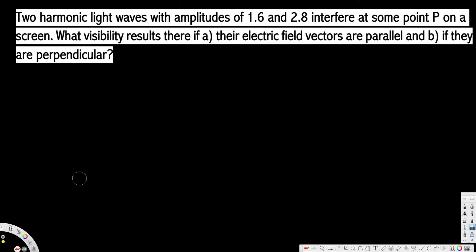Let's look at this problem. This question is asking: two harmonic light waves with amplitudes of 1.6 and 2.8 interfere at some point P on the screen. What visibility results if the electric field vectors are parallel, and if they are perpendicular? Now let's look at the case where the electric field vectors are parallel.